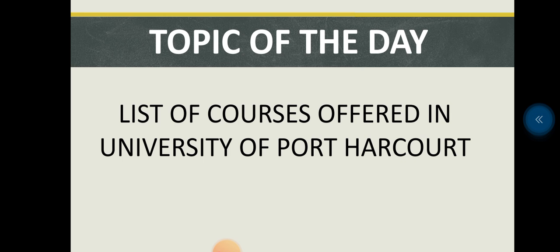So the first on our list is Accounting. After Accounting we have Adult and Non-Formal Education. After Adult and Non-Formal Education we have Adult Education. After Adult Education we have Agricultural Economics and Extension. After Agricultural Economics and Extension we have Agriculture. After Agriculture we have Anatomy. After Anatomy we have Animal and Environmental Biology. After Animal and Environmental Biology we have Animal Science. After Animal Science we have Banking and Finance.